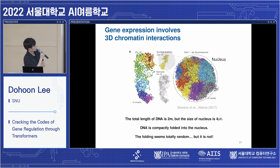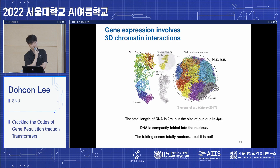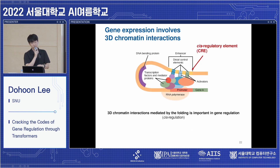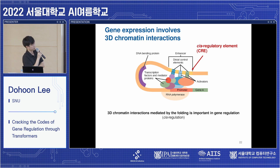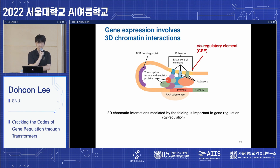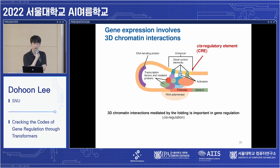This example shows one snapshot of the DNA folded into the nucleus. This folding seems totally random, but it is not. The precise folding of DNA is important for gene regulation. Two genomic regions that are far away in a one-dimensional view of the DNA can be located closely in the three-dimensional space. This kind of gene regulation mechanism is called cis-regulation, and the genomic regions participating in it are called cis-regulatory elements, or CREs.